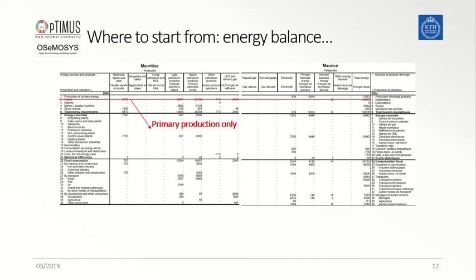As the first row in the table, the data on primary energy production is provided for the relevant energy commodities in the country. In this case, it seems the only primary energy resources produced within the country are biomass and electricity coming from renewable sources such as solar, wind, and hydro.